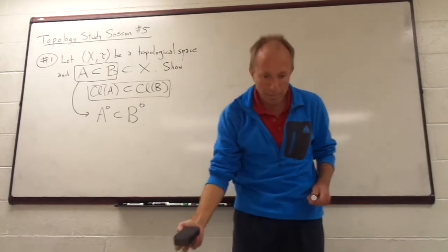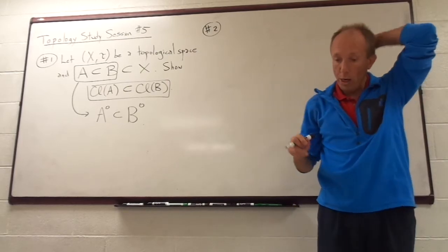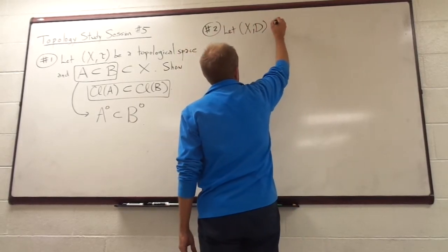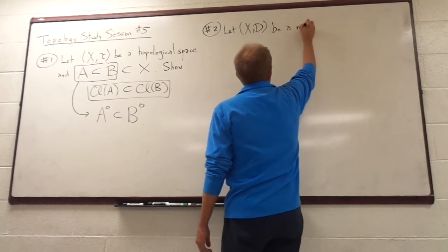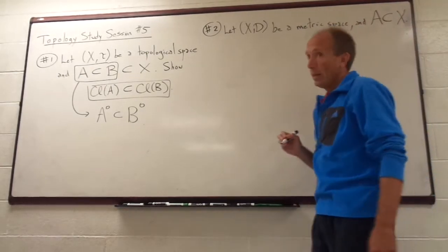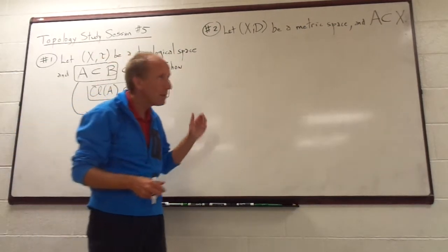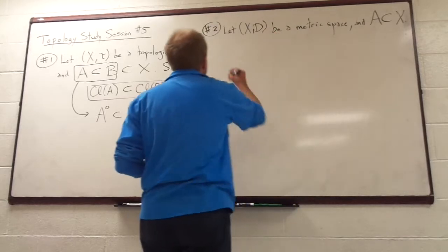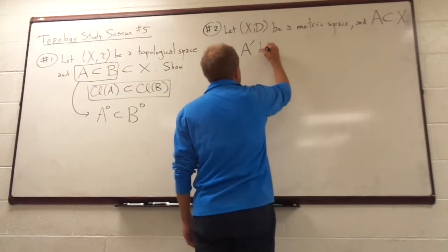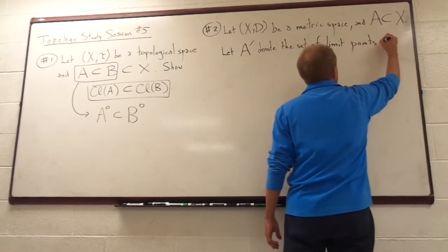Now let's take a harder problem where we actually go beyond just background stuff. Let X, d be a metric space, and let A be a subset of X. You do have to remember a little bit of the material from Chapter 2, even though the test really isn't about metric spaces. So let A prime — this is actually consistent with the book's notation — denote the set of limit points of A.